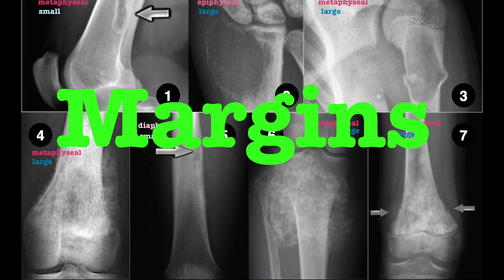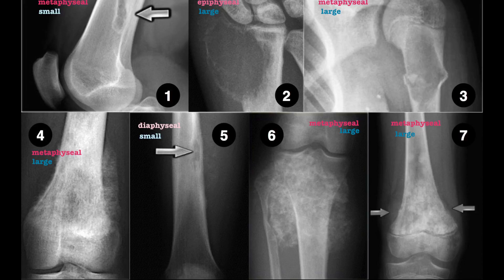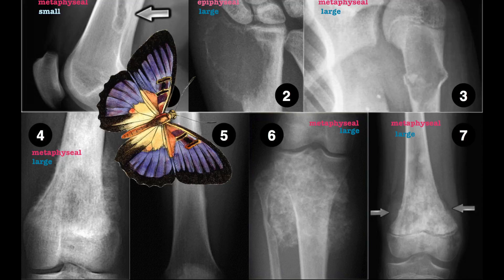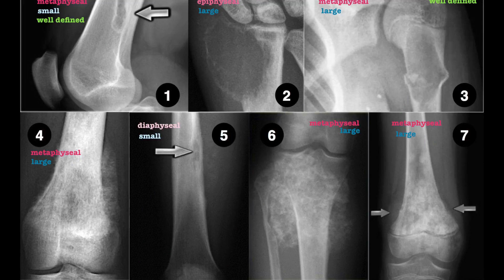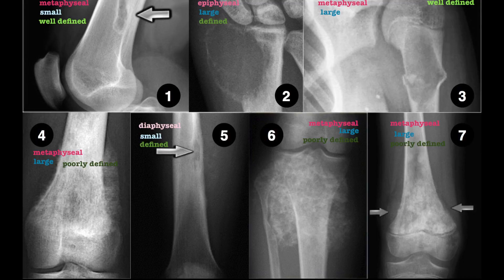M is for Margins. A well-defined lesion with a sclerotic edge suggests that there is a host response occurring, therefore the lesion is likely benign. A lesion with a moth-eaten appearance implies malignancy. Figures 1 and 3 have well-defined margins, and you could include figures 2 and 5 in that. Figures 4, 6 and 7 are more poorly defined. Note the sclerotic edges seen in figures 1 and 3, suggesting a benign process.